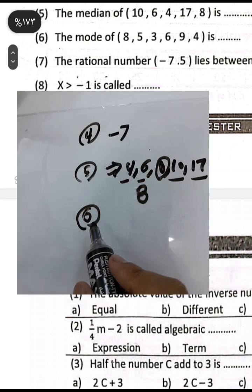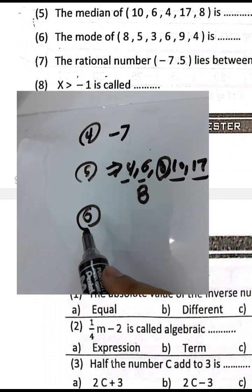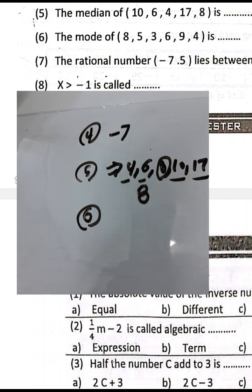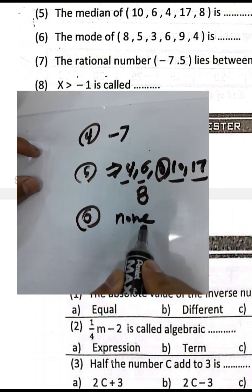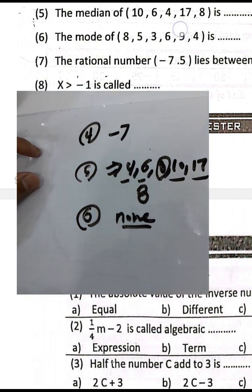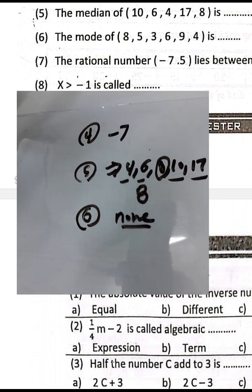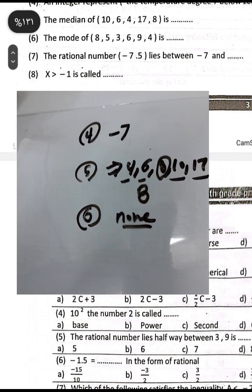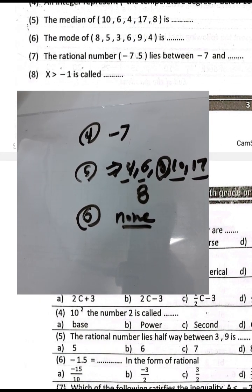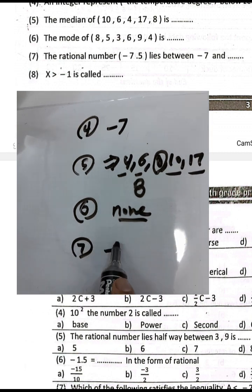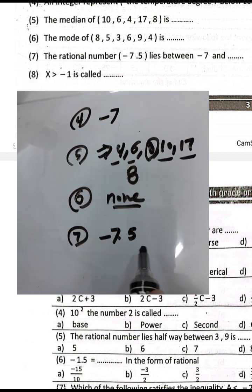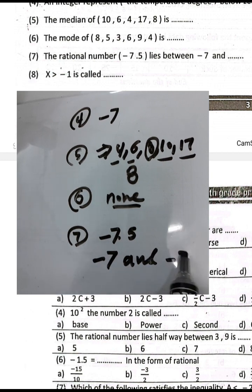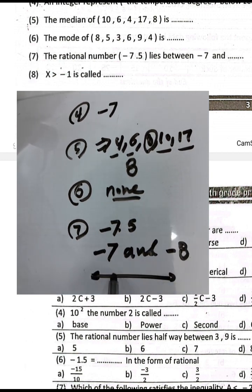For the mode of eight, five, six, nine, four — we have no number repeating. So we have no mode for this set of numbers.